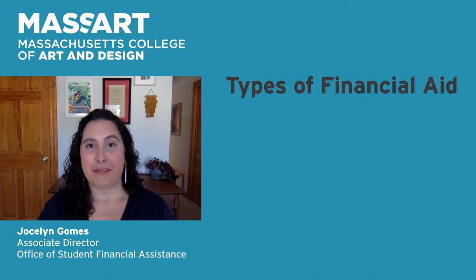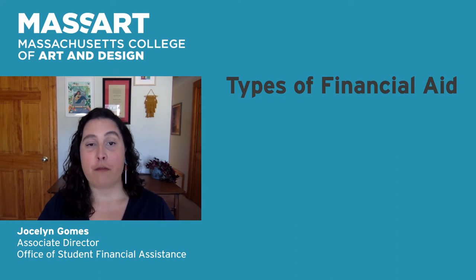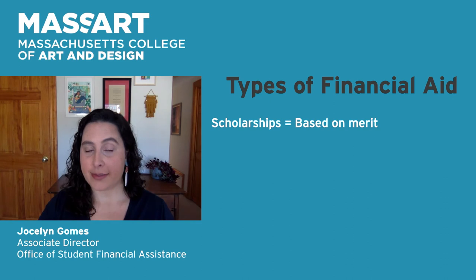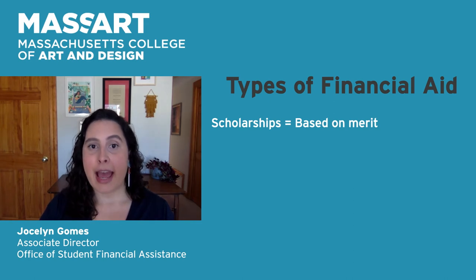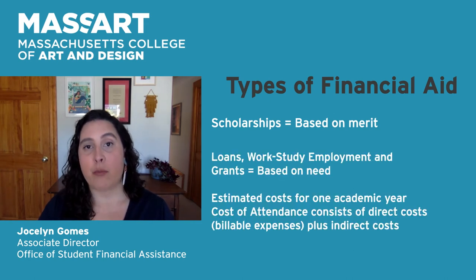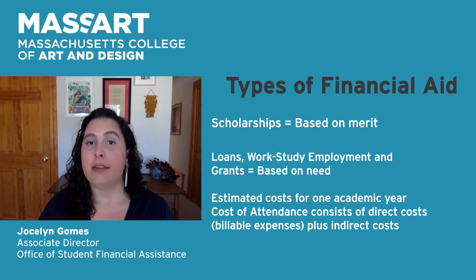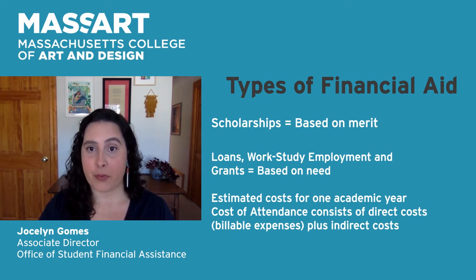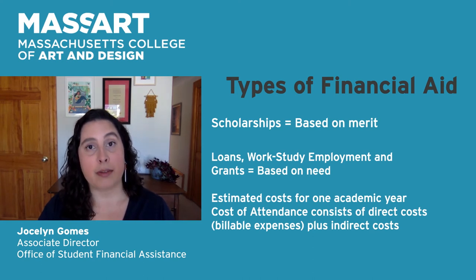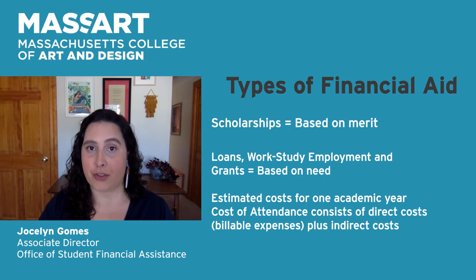What types of financial aid are available? There are four different types of financial aid: scholarships and grants, which are considered gift aid, and loans and work-study employment, which are considered self-help aid. Scholarships are typically awarded based on merit, while grants, certain types of loan programs, and work-study employment are awarded based on financial need.